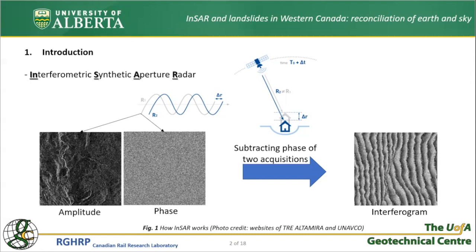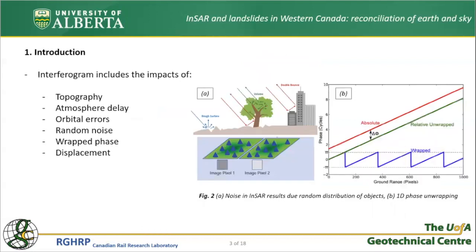If the phase of two backscattered waves received by the satellite is subtracted, a pattern of concentric rings is obtained, which is known as an interferogram. This interferogram can be transformed to displacement values after certain processing stages and removing unfavorable layers. Different items play a role in creating an interferogram, such as topography, which needs to be addressed using available digital elevation models. Atmosphere is another factor — free particles in the ionosphere, and clouds, water, rain, and fog in the troposphere affect signal propagation. Although these effects are quite chaotic, their statistical characteristics help us filter them from an interferogram.